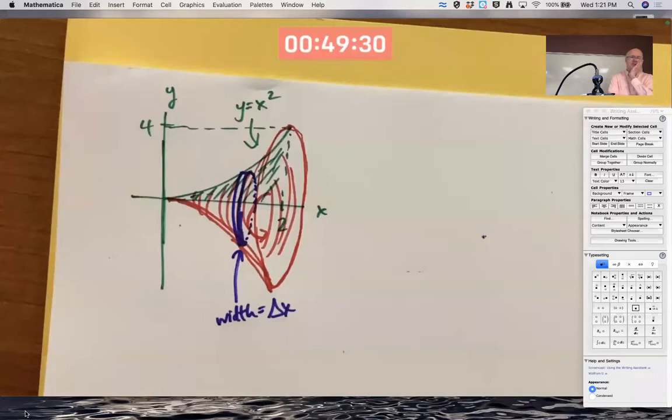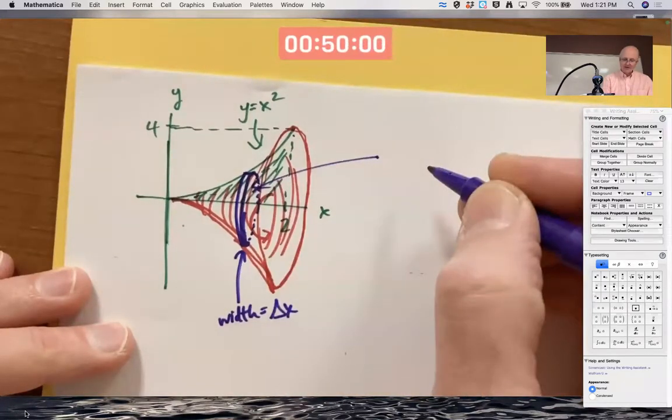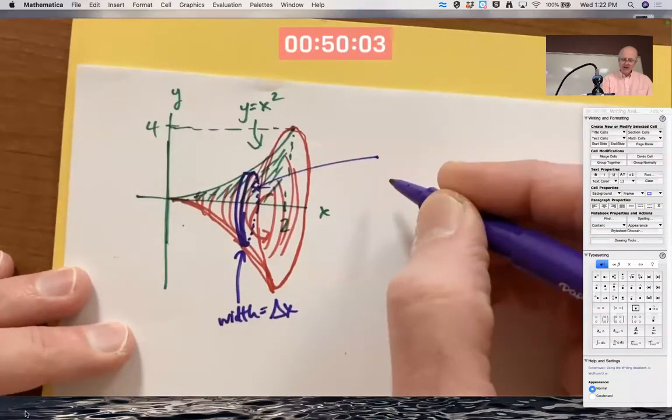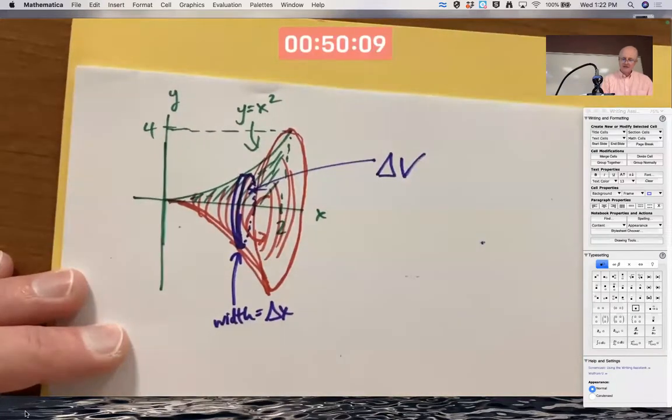0.1, 0.01, you could even go more extreme and say 10 to the negative 100 power, 10 to the negative a million power, which is impossible to draw on any ordinary scale. You're going to go hog wild in your imagination. That thin slice, that wafer, that really thin hockey puck, has got a certain very small volume. Why very small volume? Because the width is very small.